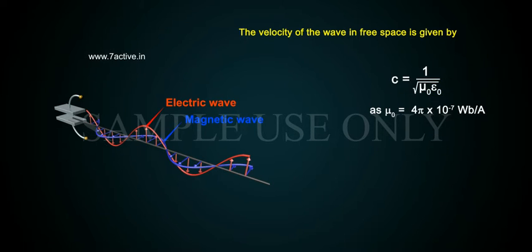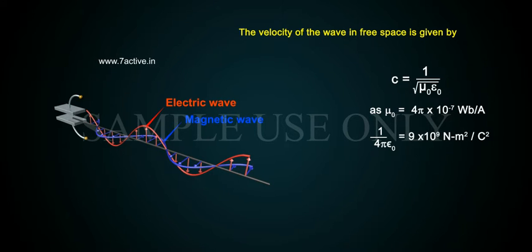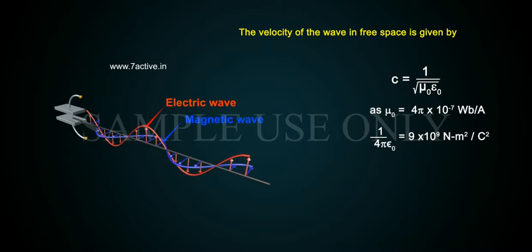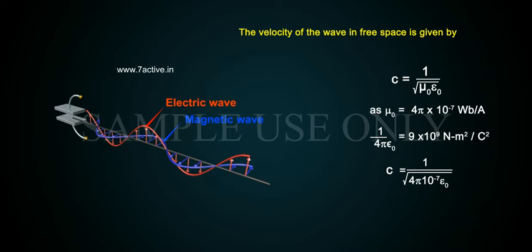Since mu0 equals 4π × 10⁻⁷ V·s per ampere and 1 over 4π epsilon0 equals 9 × 10⁹ N·m² per Coulomb squared, we get C equals 1 over the square root of 4π × 10⁻⁷ × epsilon0, which equals 1 over the square root of 4π epsilon0.